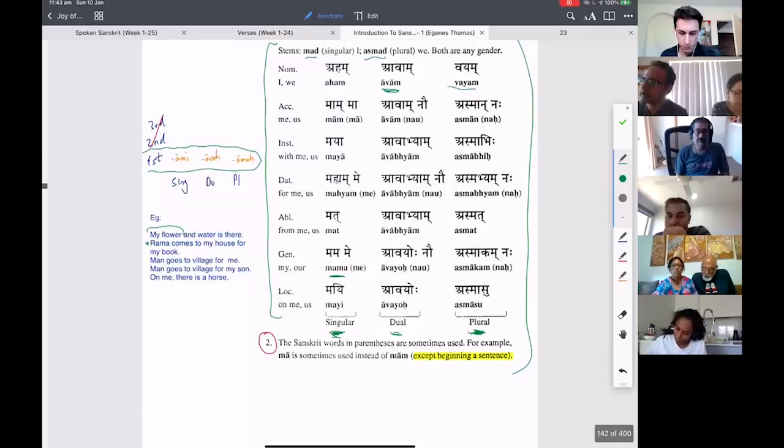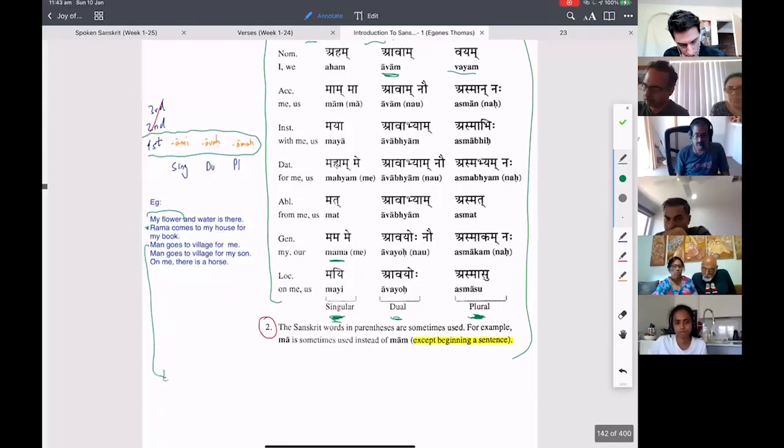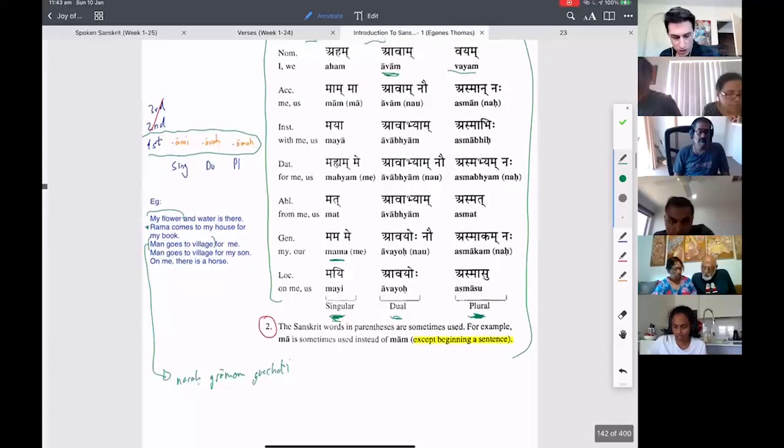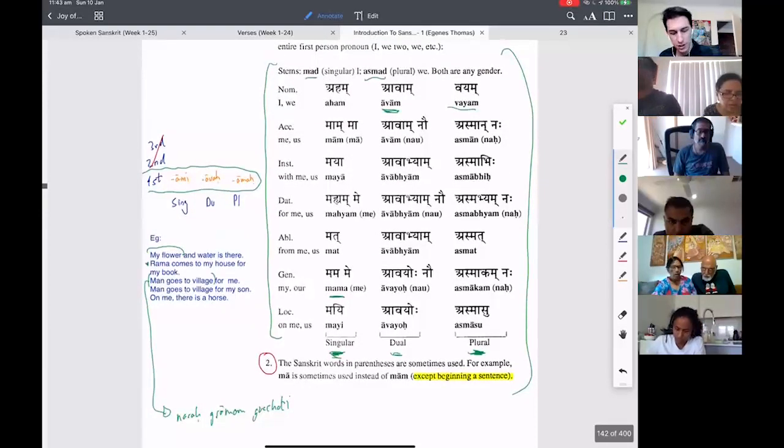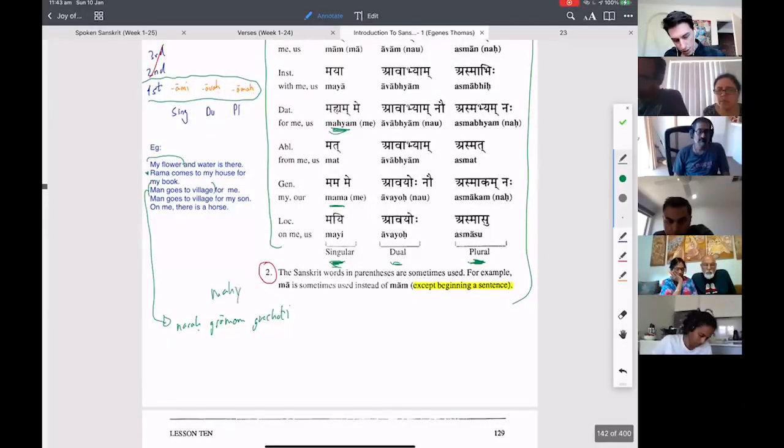So you're not changing, you're just adding the Mama, not changing the verb at all. Man goes to village. For me, man goes to village. And then for me, you say here, for - what's for? Dative.